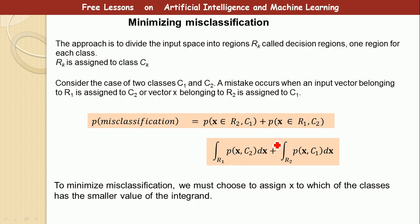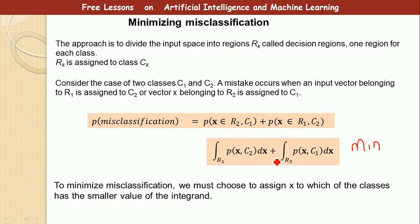Taking the integral over the whole region, the total misclassification is the joint probability of assigning to c2 when it belongs to c1, plus the joint probability of assigning to c1 when it belongs to c2. To minimize misclassification, we must assign x to whichever class has the smaller value of the integral. Try to understand and be able to write this formula, especially for an exam.